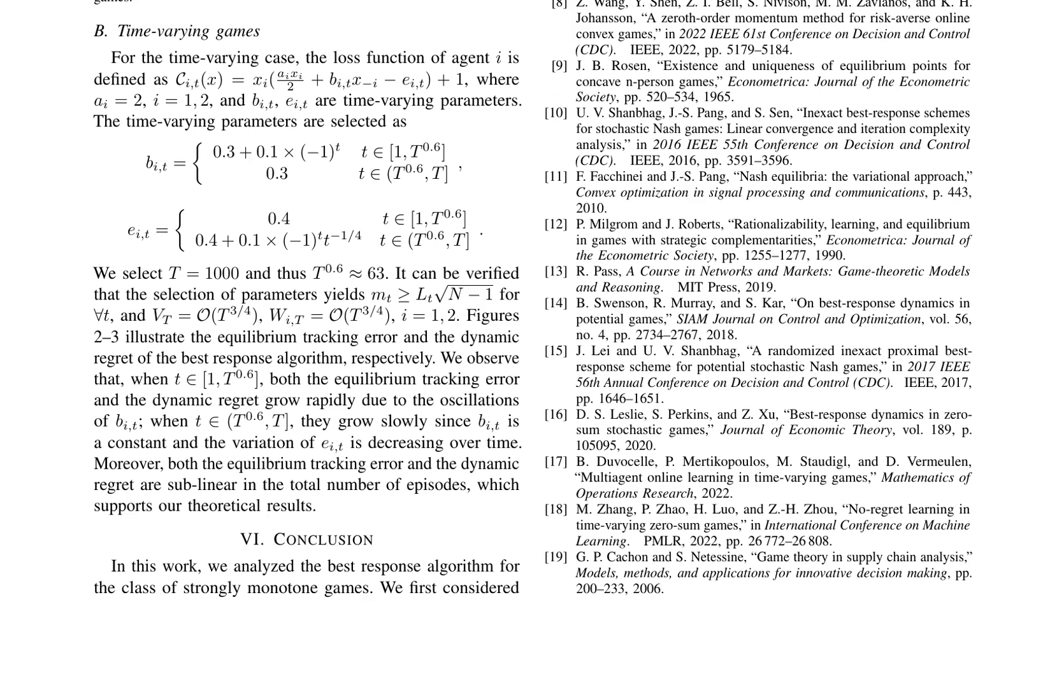Figures 2 and 3 illustrate these metrics, respectively, which both exhibit rapid growth when t ∈ [1, t^{0.6}] due to the oscillations of bi(t). In contrast, they grow slowly when t ∈ [t^{0.6}, t]. Notably, both metrics demonstrate sublinear growth in the total number of episodes, supporting the theoretical results. This analysis provides valuable insights into the behavior of the best response algorithm in time-varying games, highlighting its ability to adapt to changing equilibria while maintaining a sublinear regret bound.